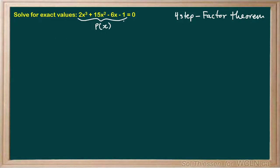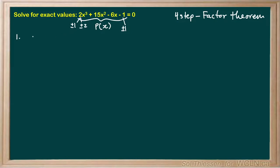Remember, the potential roots we should check have numerators that are factors of the constant term, which is negative 1 — it has factors plus or minus 1 — and denominators that are factors of the leading coefficient. The leading coefficient is 2, which has factors plus or minus 1 and plus or minus 2. So let's do step 1 and start by evaluating P of positive and negative 1, which comes from a numerator of plus or minus 1 and a denominator of plus or minus 1.